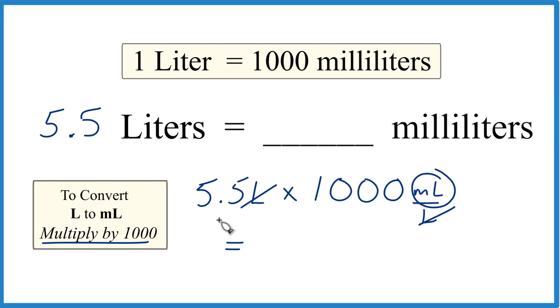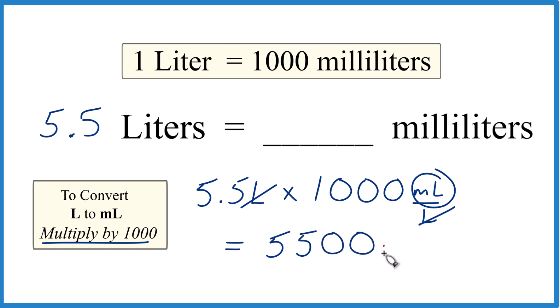So 5.5 times a thousand is 5,500. And again, the units — milliliters — that's all that's left.